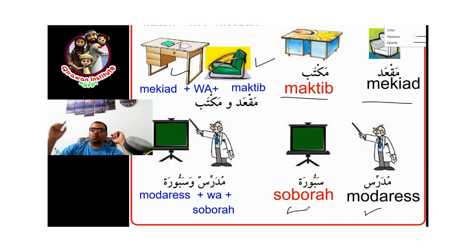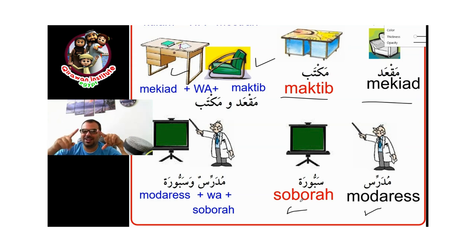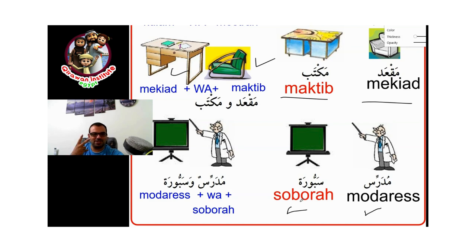What are the tools that a mudarris uses? Suboorah. Suboorah means board. So: mudarris wa suboorah. Say it again: mudarris wa suboorah. I go to my school and I find a teacher and a board. How can I say it in Arabic? Mudarris wa suboorah. And also: miq'ad wa maktab.